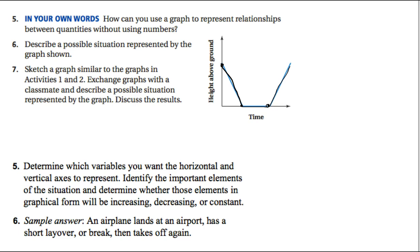Other possible situations for the graph could be a kite that comes down, you wind the string, get it ready, and then it goes back up. There are any number of possible situations. Students could also sketch their own graph and exchange it with a classmate to interpret.